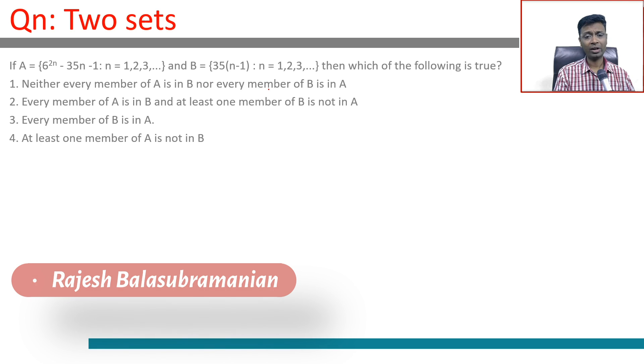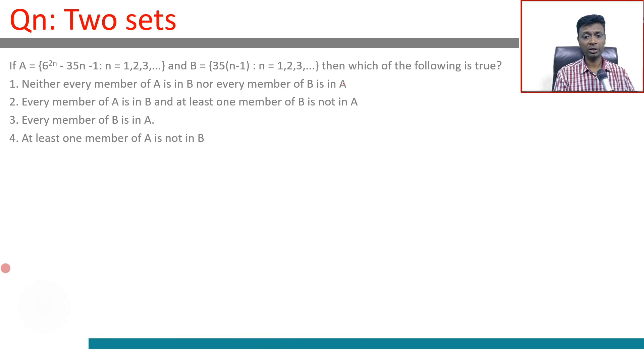Every member of A is in B and at least one member of B is not in A. Every member of B is in A. At least one member of A is not in B, whereas A is not a subset of B.